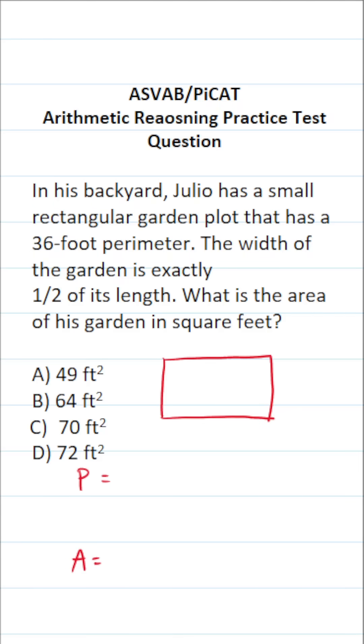Again, those are formulas you do have to commit to memory at some point. How do you find the area of a rectangle? It's simply length times width. Now, we'll talk about finding the perimeter of this rectangle in just a minute.